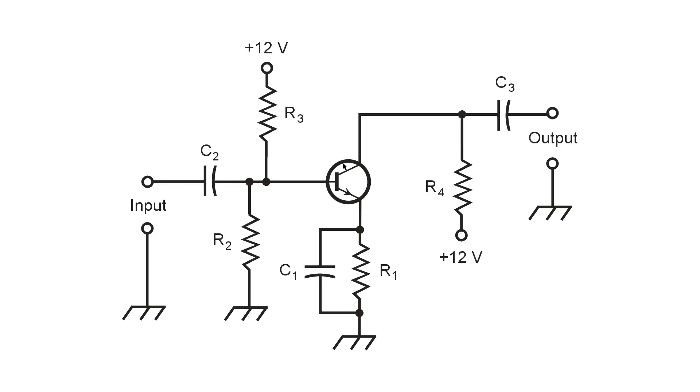So now we have a transistor that is biased ideally for amplification of the signal, provided that we choose the correct value for R4.